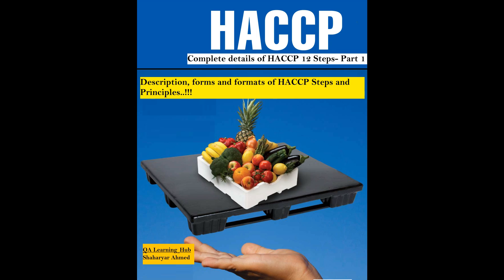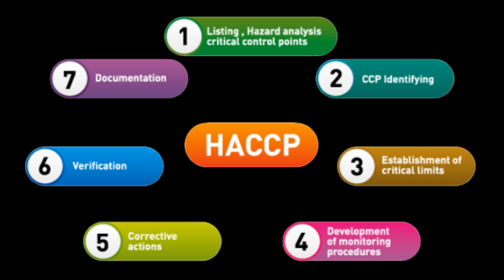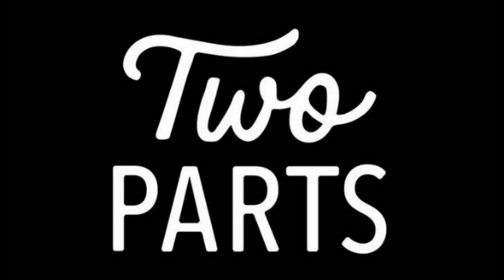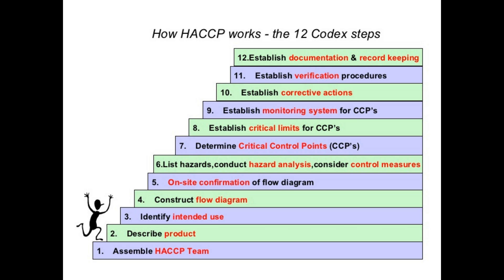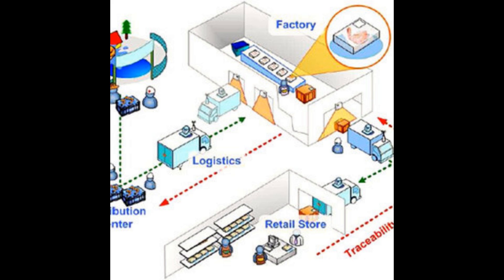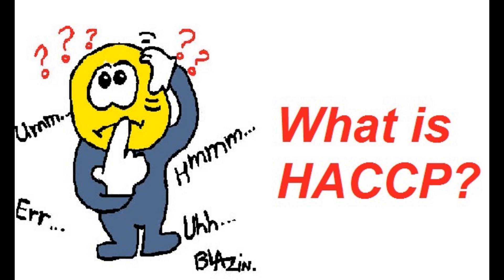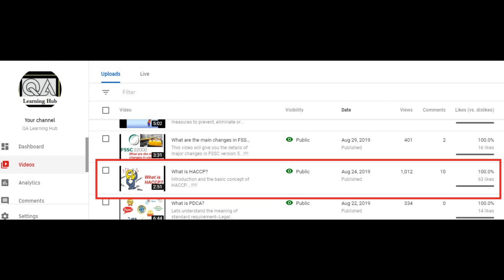There are 12 steps of HACCP which includes 7 principles, and in this series of 2 videos we are going to understand all 12 steps in detail. I will explain each step with forms and description so that you can easily make such documents and implement these steps in any organization involved directly or indirectly in a food chain. To understand what HACCP is and its unique concept and importance, please watch my video titled 'What is HACCP.'